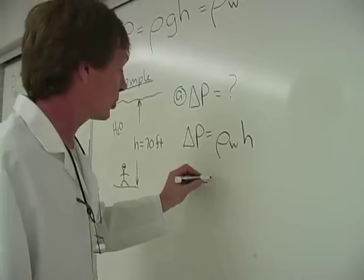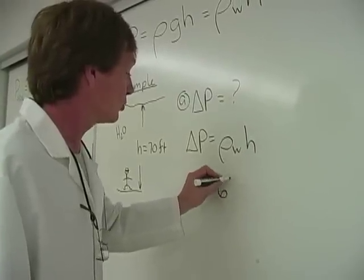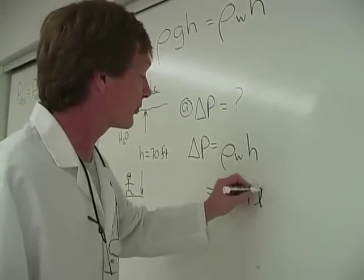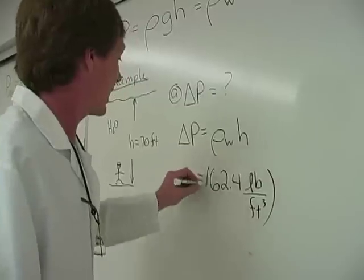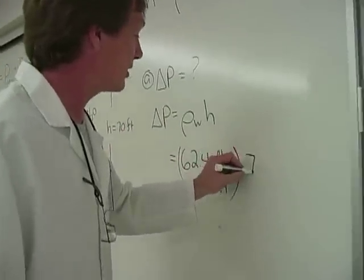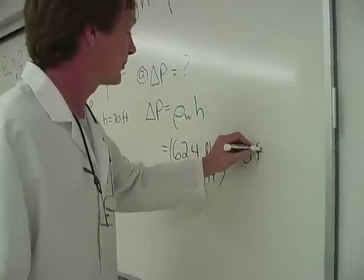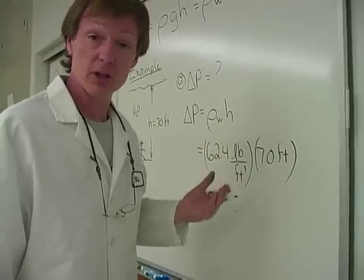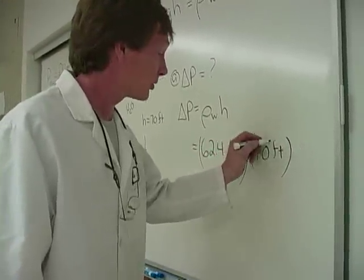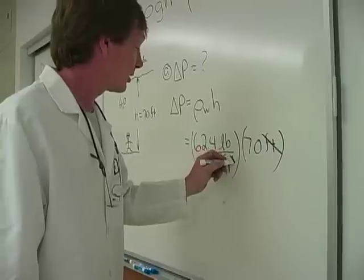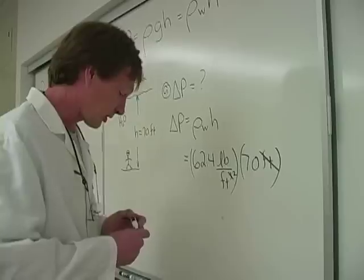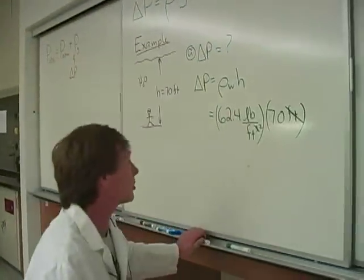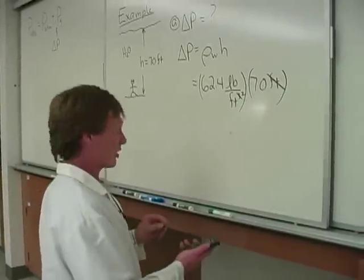Now, the weight density of pure water is 62.4 pounds per cubic foot. And we're at a depth, H, of 70 feet. Remember, the units are just as important as the numbers. So we've got a foot canceling here. I'll have feet squared on the bottom. I'll have pounds per square foot. That's great. That's what we'd expect. Now, 62.4 times 70, it's going to be about 4,200 pounds per square foot.